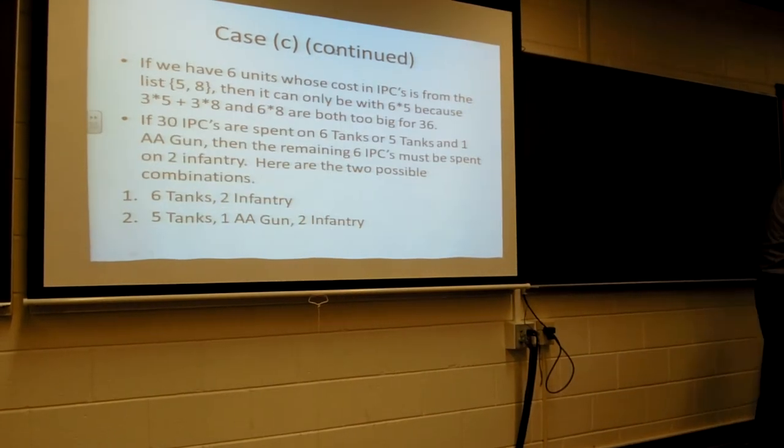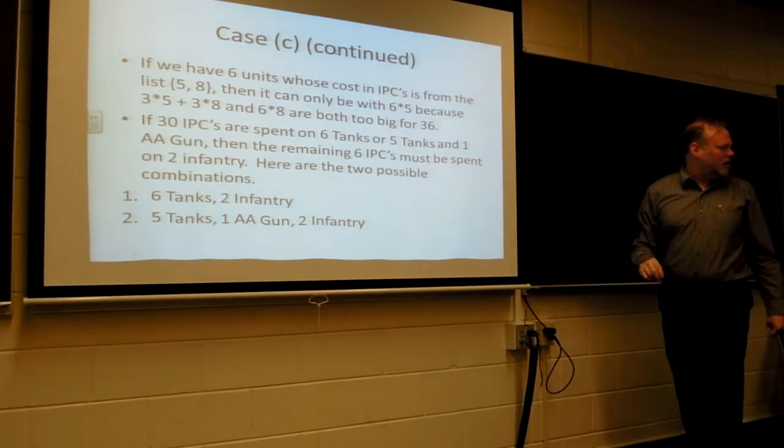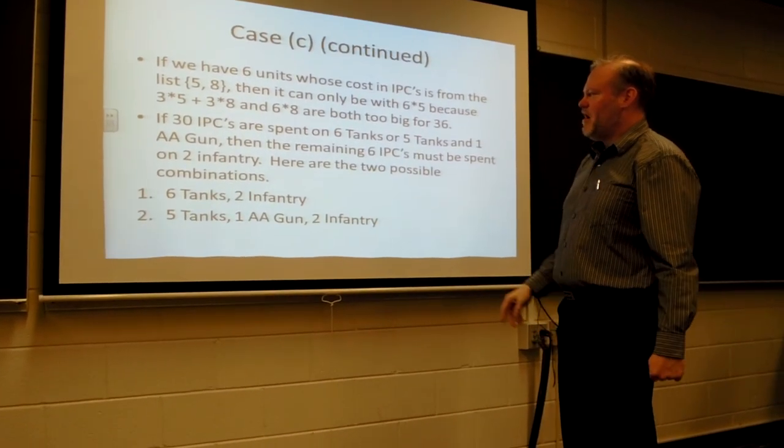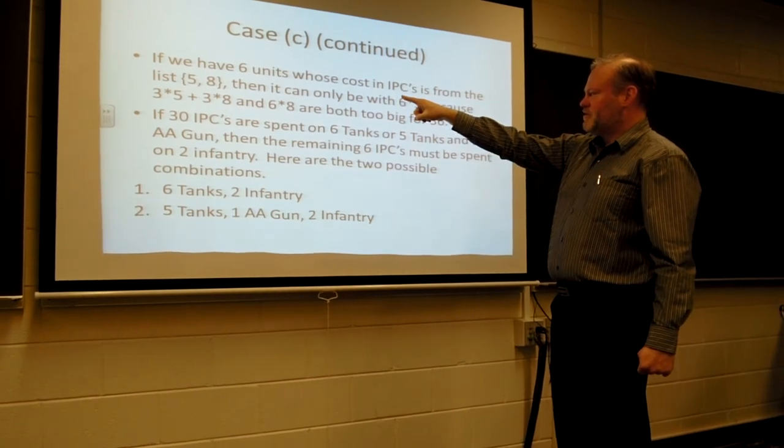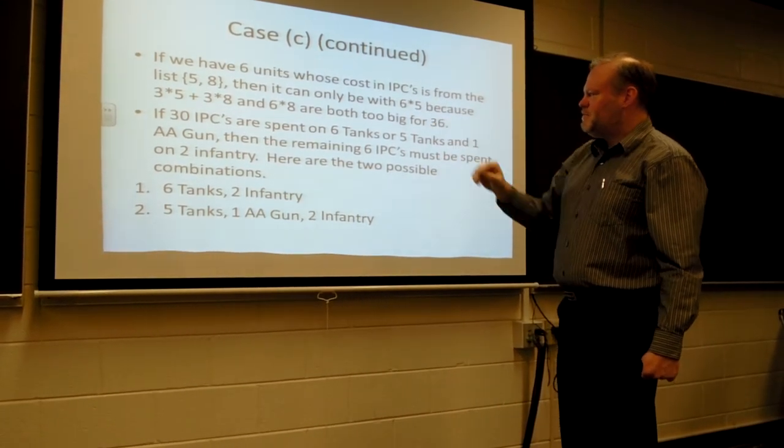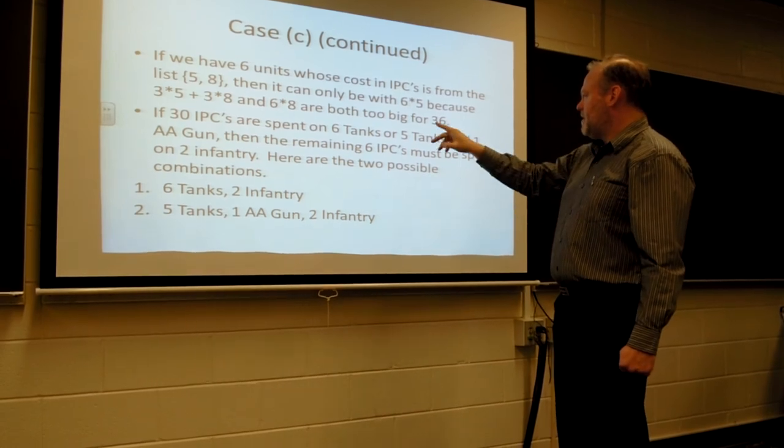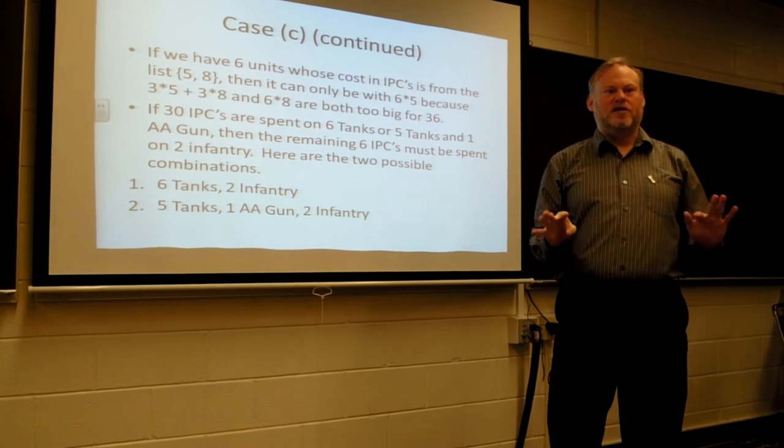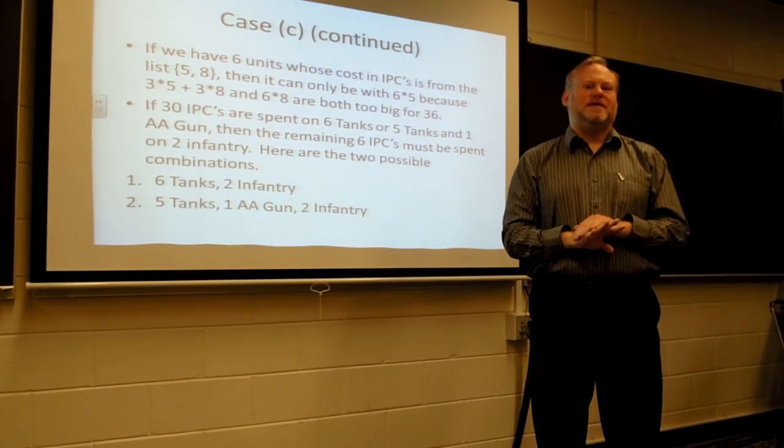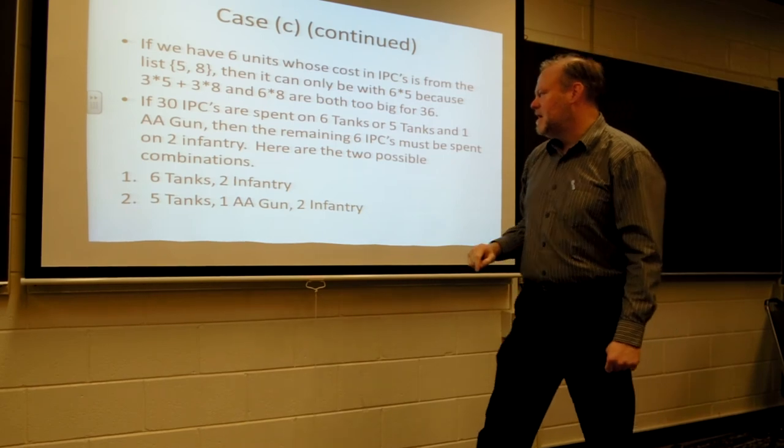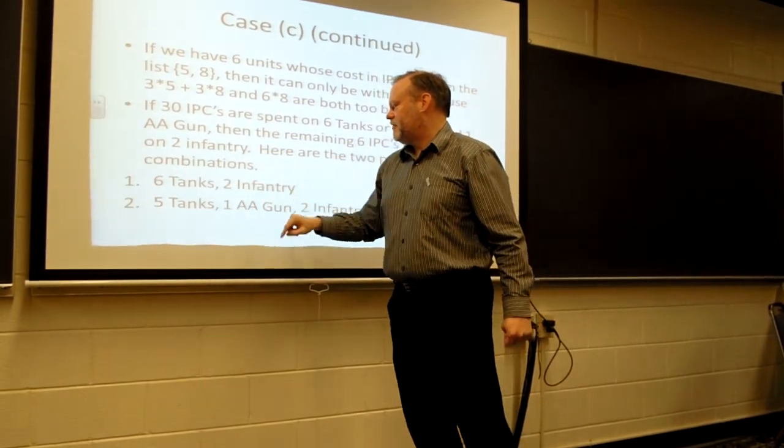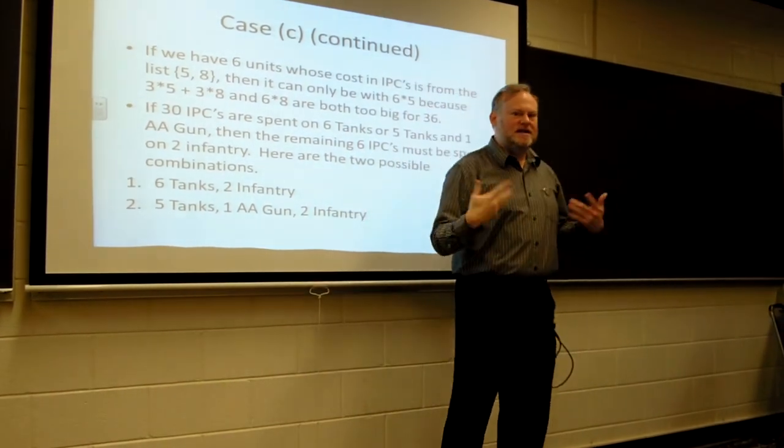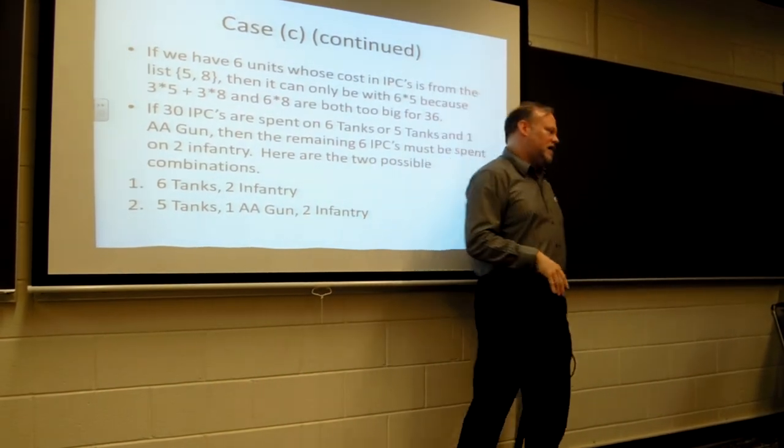And then finally, it turns out if we have six units whose cost is from the list five and eight, it has to be the six times five, because three times five plus three times eight and six times eight are both too big. If you spend 30 IPCs, it can be on six tanks or five tanks and one anti-aircraft gun. The only thing that you can do with the remaining $6, because again, we're assuming you spend all 36 IPCs, is to go two infantry. So you have six tanks, two infantry, or five tanks, one anti-aircraft gun and two infantry.